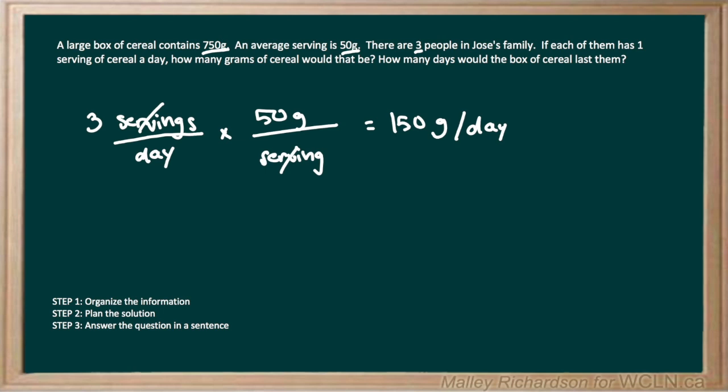Now let's move on to the second part. How many days would the box of cereal last them? So we know that there are 750 grams of cereal per box. So let's write that out as 750 grams of cereal. Now we're going to divide that by the answer that we just solved for above. So now we divide that by 150 grams per day.